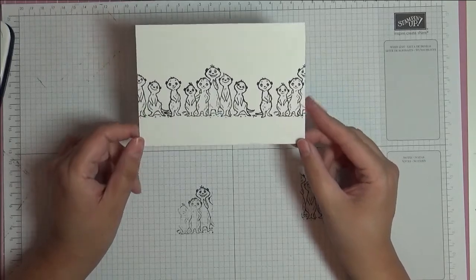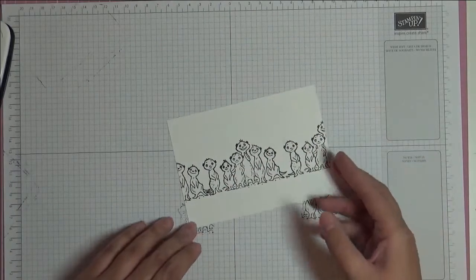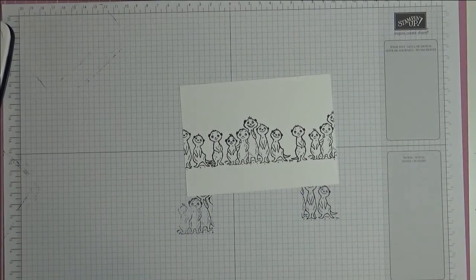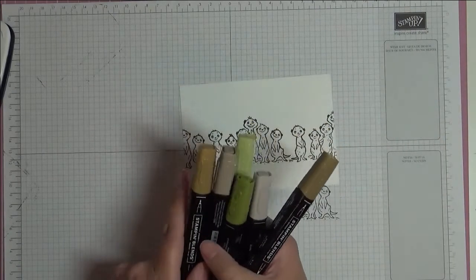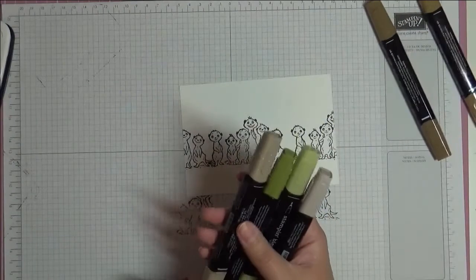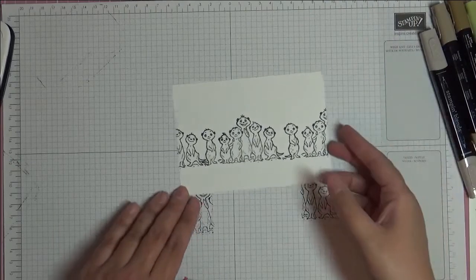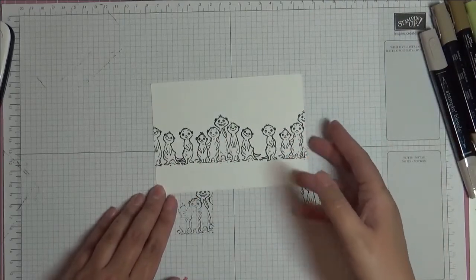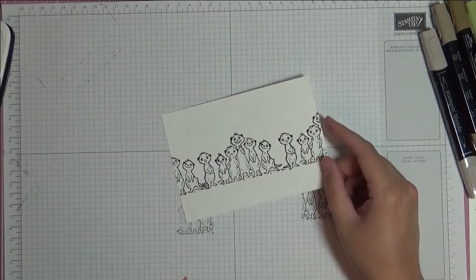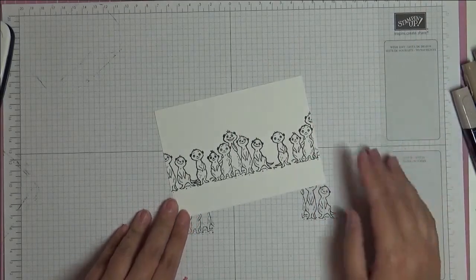Okay, so there we have all our little meerkats. I'm going to color them in using Blends and then cut out my little strip. The Blends I'm using are light and dark Soft Suede, light and dark Crumb Cake, and light and dark Old Olive. All the meerkats were done in basically Crumb Cake with a tiny bit of accent of Soft Suede, and the grass is Old Olive. I'm going to put you on fast forward through this bit and stick some music on, so see you soon.